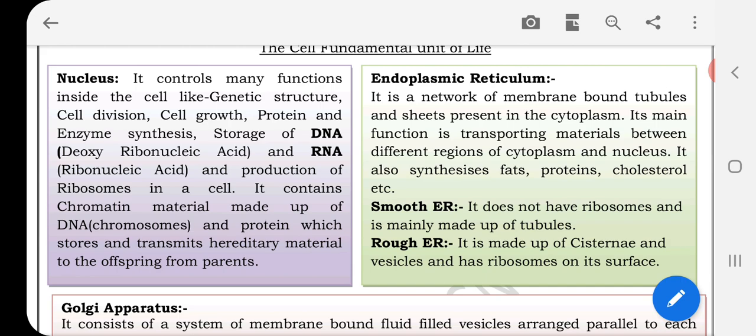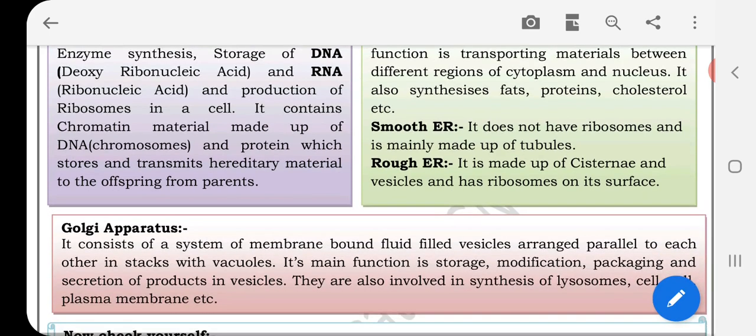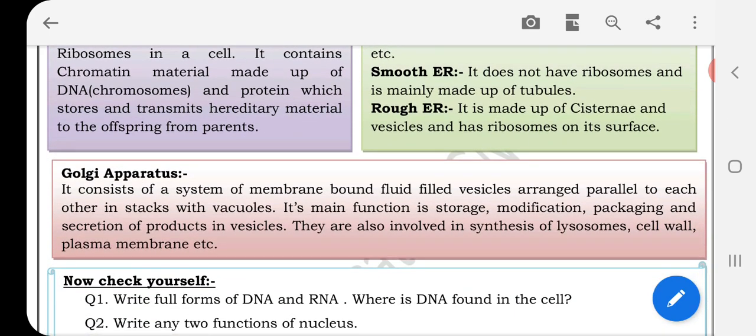Smooth endoplasmic reticulum: it doesn't have ribosomes and is mainly made up of tubules. Rough endoplasmic reticulum: it is made up of cisternae and vesicles and has ribosomes on its surface.